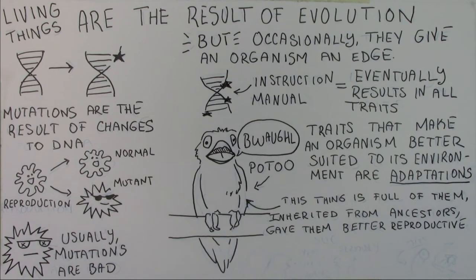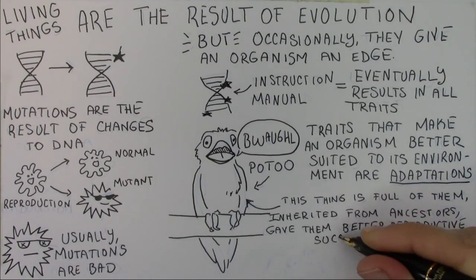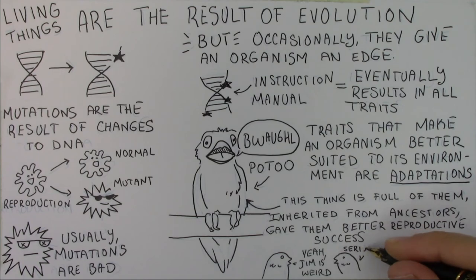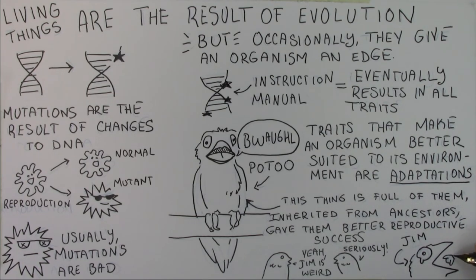So adaptations make you more suited to your environment, and they're a result of these occasional mutations that give you better reproductive success. So as bizarre as this organism looks, it evolved that way because it helps it to survive in its environment.